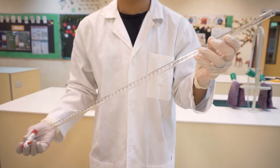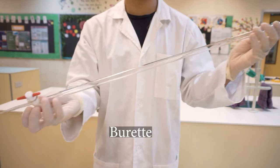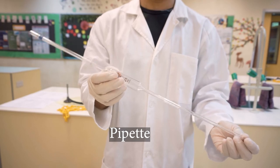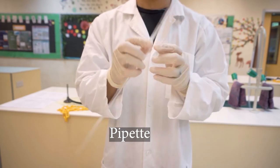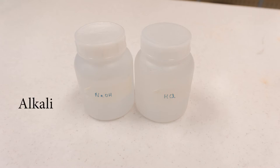First and foremost, you will need a burette which is usually 50 ml, a glass pipette which has a fixed volume of usually 25 ml. You will need an acid and alkali.